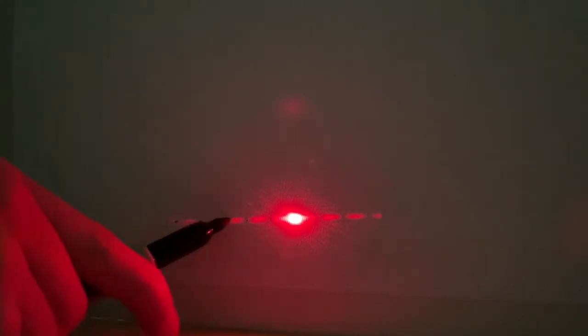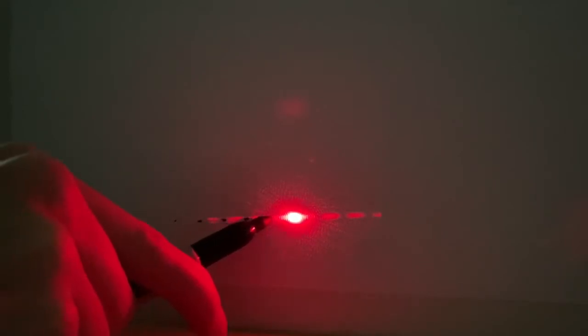With a couple measurements and a little math this diffraction pattern can tell us the diameter of your hair. Use a marker to mark the center of the dark spots on one side of the diffraction pattern. You're going to mark several spots so that we can average the distances between them to get a more accurate measurement.